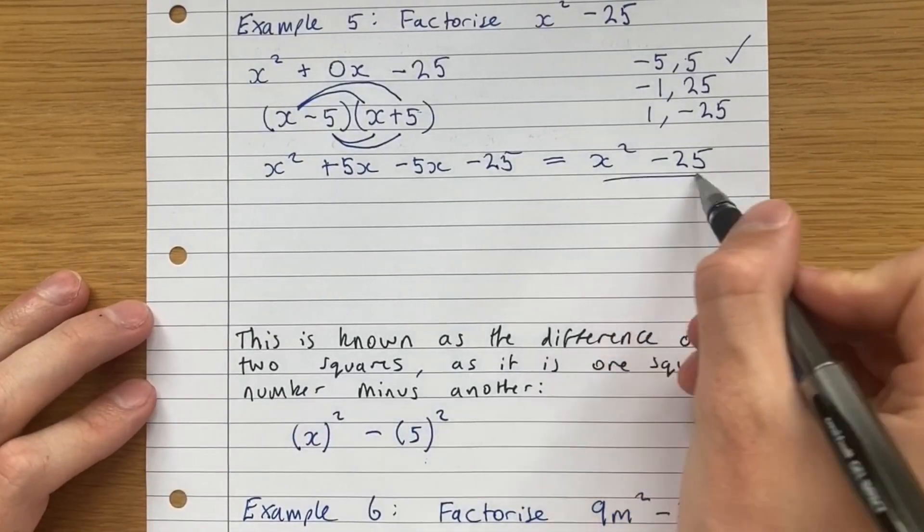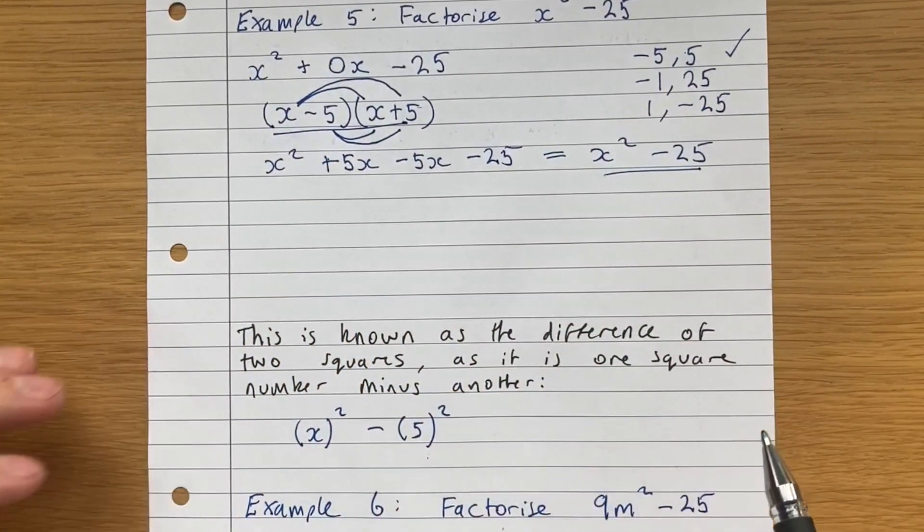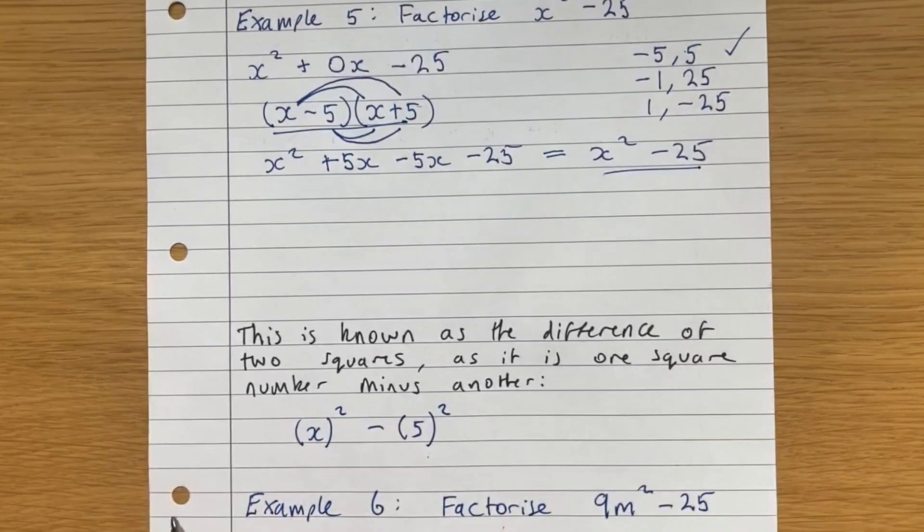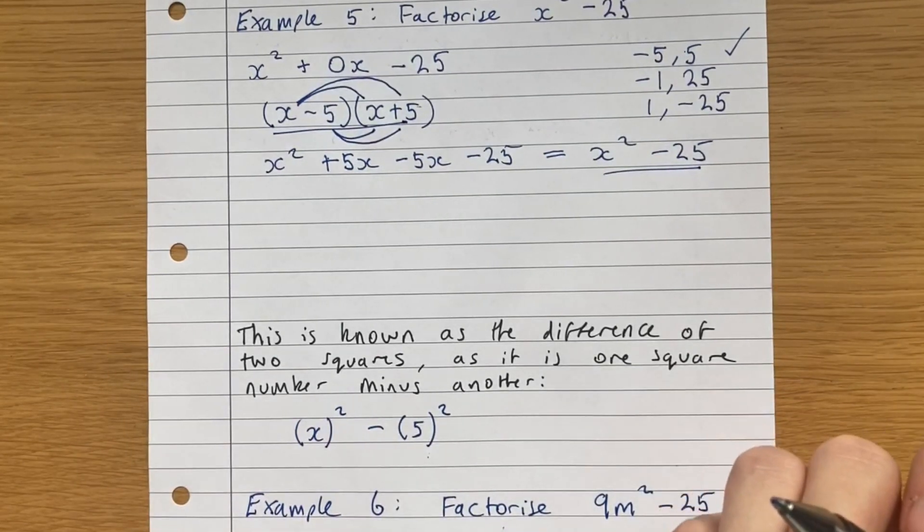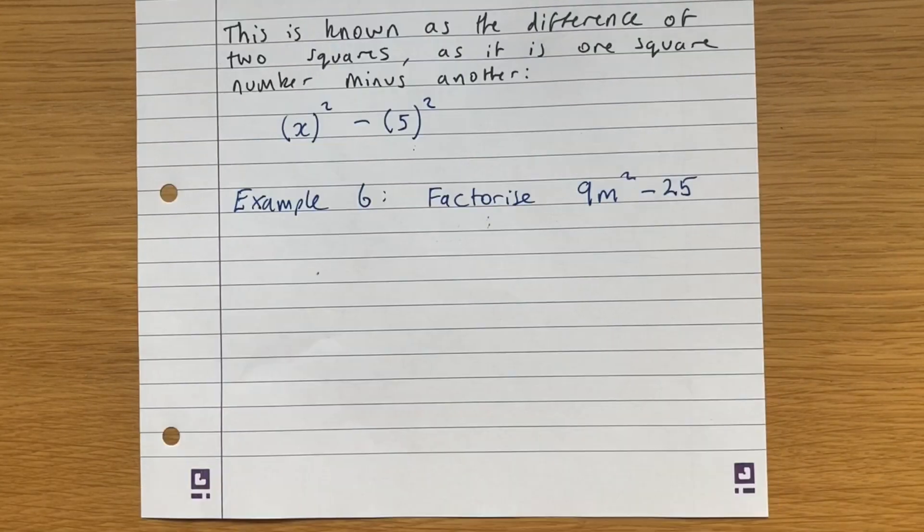So what this is known as, or this is known as, is the difference of two squares. Because it's one square number minus another square number, right? It's just x squared minus 5 squared. And since these are both square numbers, and one's being subtracted from the other, it's simply just the difference of two squares.